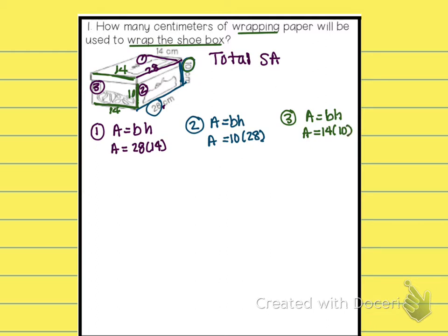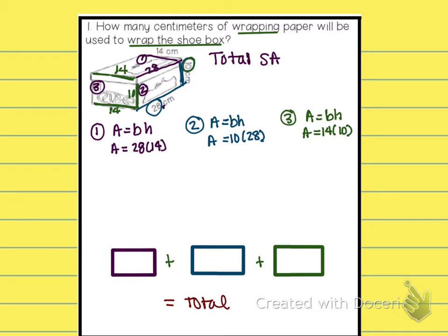Okay, so after we have total, that means that we need to take the answer here, and add it to our second area, and then add that to our third area, and all of that together equals total surface area. Okay, so I want you to press pause, do the math, and then press play once you have finished.